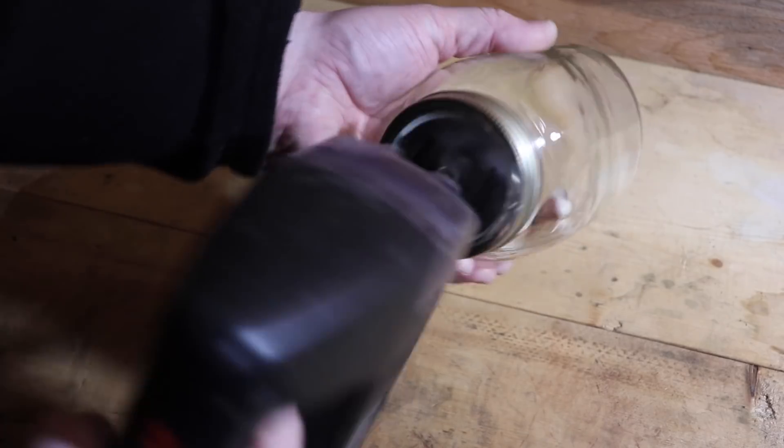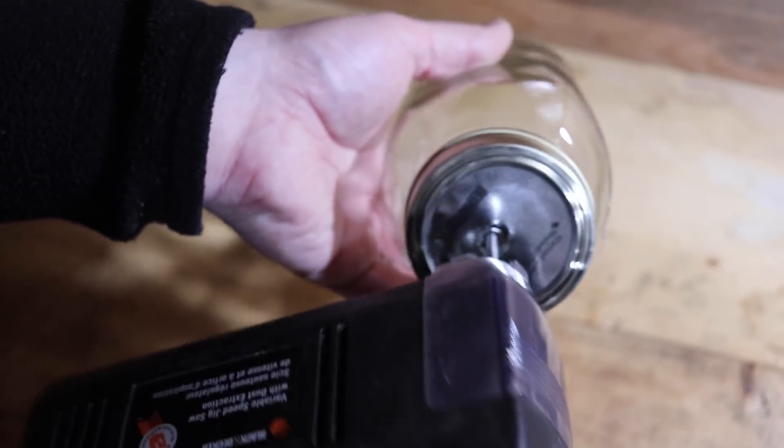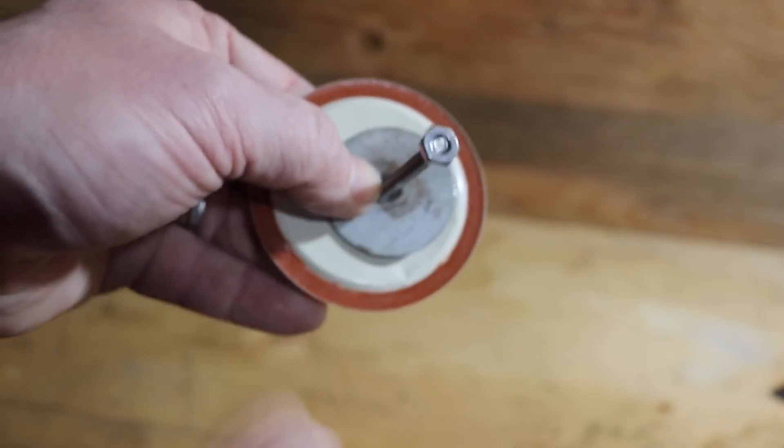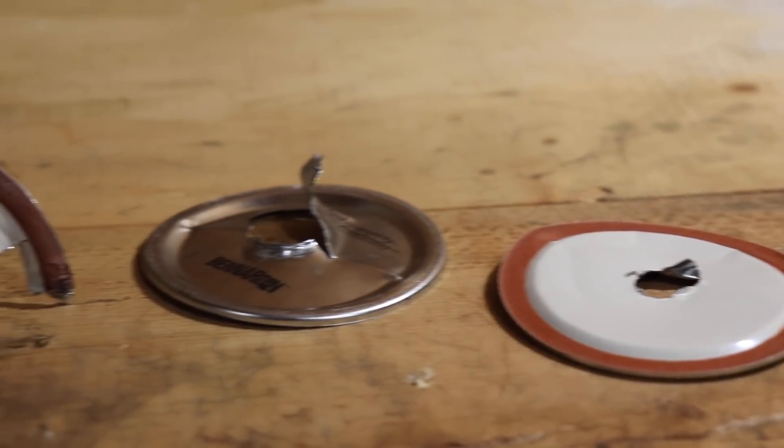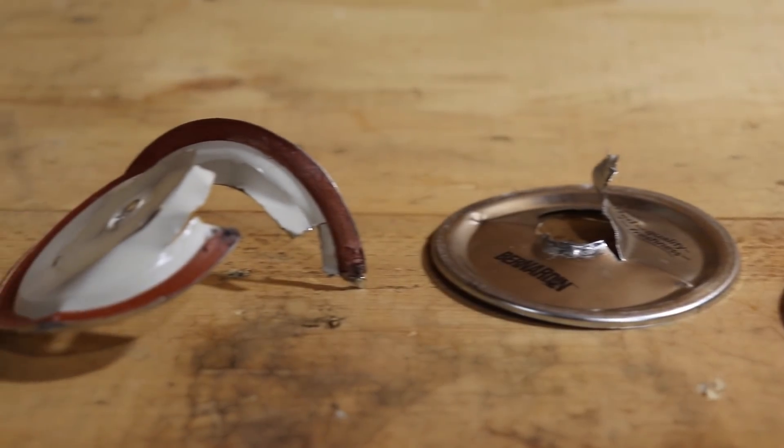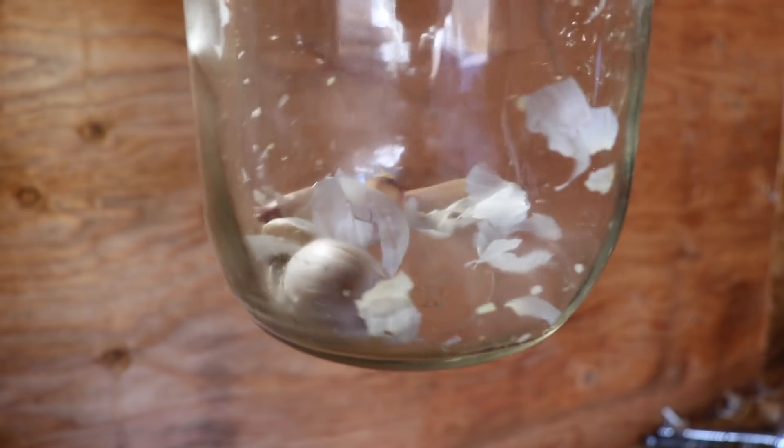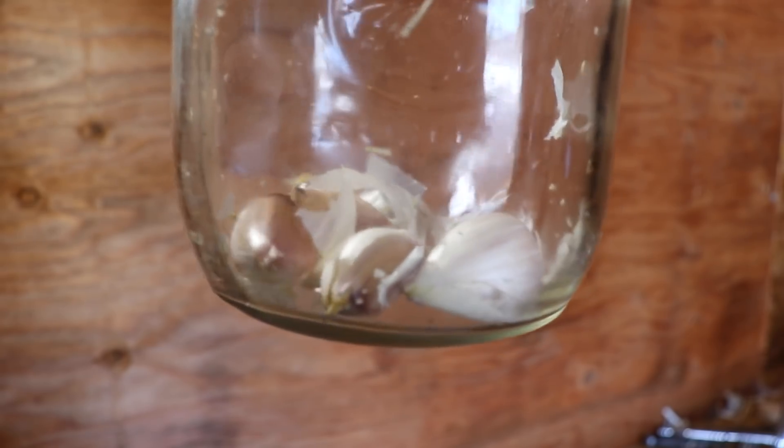But unfortunately, with all that force, it also quickly tore apart the thin metal lid. So, I tried adding a large washer and inserting another lid as reinforcements, but alas, the results were essentially the same. Plus, another thing that each of my attempts had in common was the fact that the garlic peels remained mostly intact.